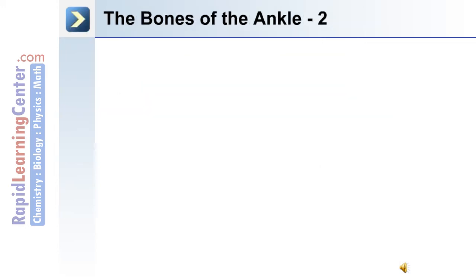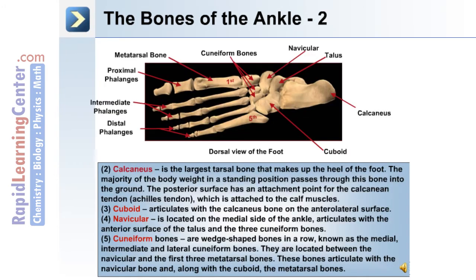The second tarsal bone we'll discuss is the calcaneus, the largest tarsal bone that makes up the heel of the foot. The majority of body weight in a standing position passes through this bone into the ground. The posterior surface has an attachment point for the calcaneal tendon or Achilles tendon, which is attached to the calf muscles.